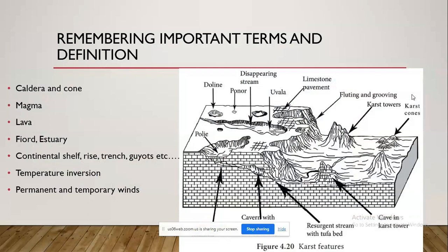Remembering important terms and definitions is essential. There are many terms in geography you will be hearing for the first time — for example, caldera, corn, magma, lava, fjords, estuaries, continental shelf, continental rise, trenches, geos, temperature inversion, and permanent and temporary winds. These kinds of important keywords will appear while reading GC Leong or NCERTs, so note these words down in your notes copy and write the definition along with a diagram.